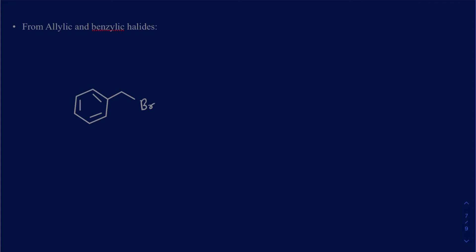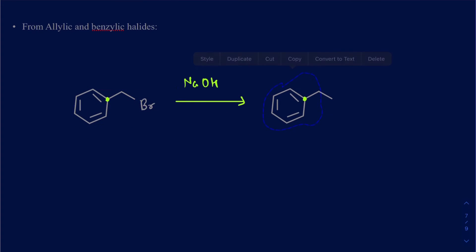Now let's look at allylic and benzylic halides. Suppose I have this benzylic bromide and I use NaOH. This particular alkyl halide does have a beta carbon, but that beta carbon does not have any proton on it. Since it doesn't have any hydrogen, I don't have to worry about an elimination reaction. The only thing it can do is substitution, so it's going to put an OH there. If I use NaOH, it will do an SN2 mechanism where the lone pair from oxygen attacks and the leaving group leaves simultaneously.